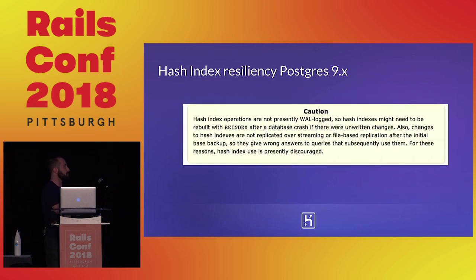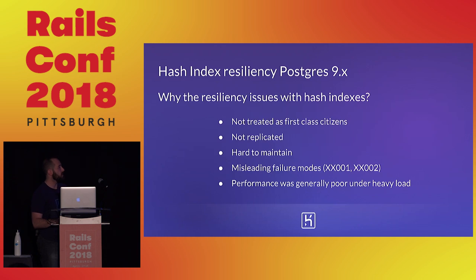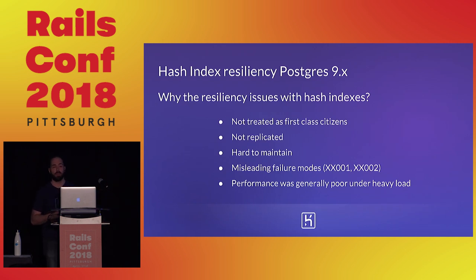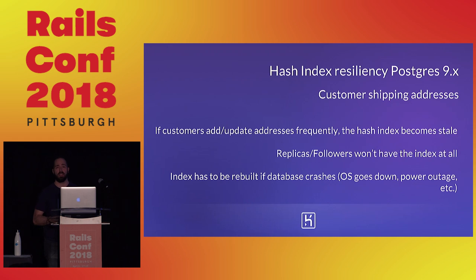Hash indexes aren't well supported in Postgres 9.x. The key issue: replication is not supported, so it's not treated as a first-class citizen. You also get a lot of misleading failures — what looks like a data corruption issue is actually an index corruption because the hash index can't keep up. With extremely large data sets, you sometimes have to completely axe the hash index and rebuild it from scratch, which is not a great experience.